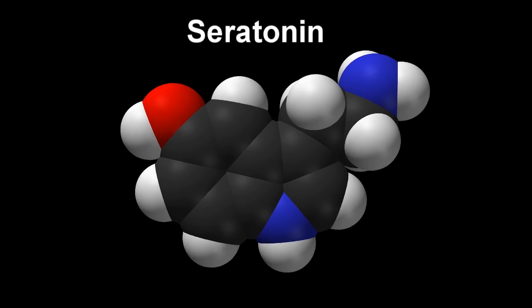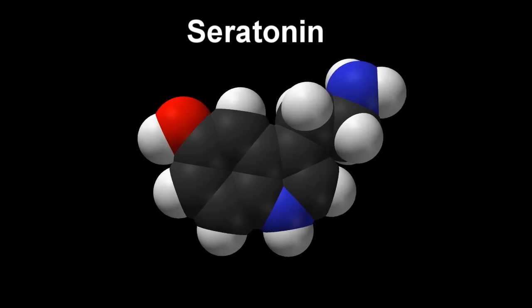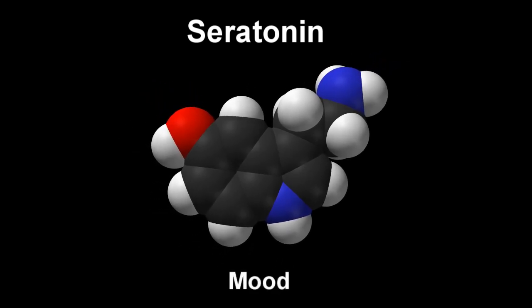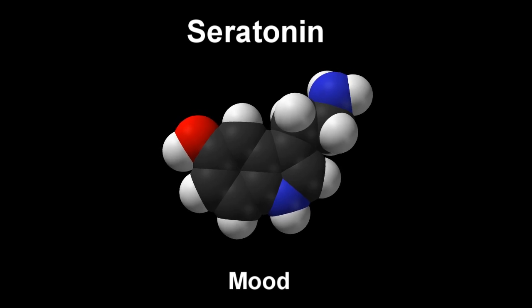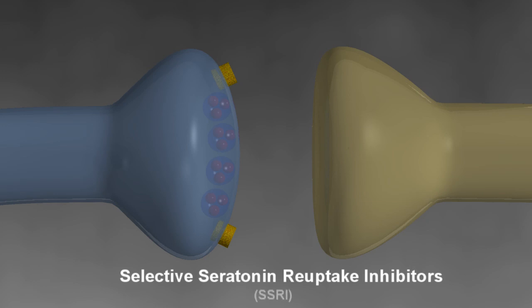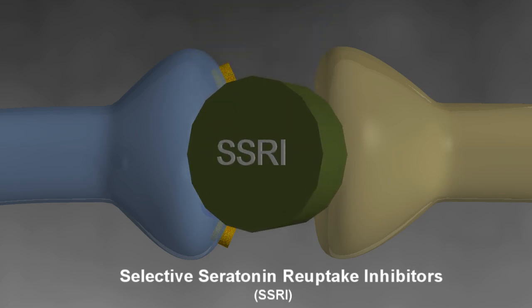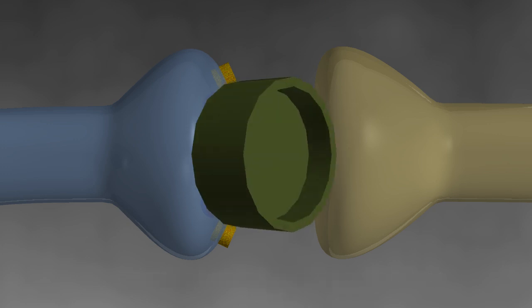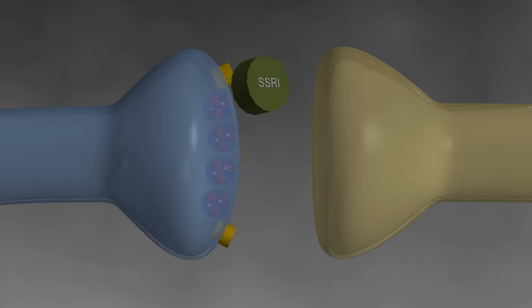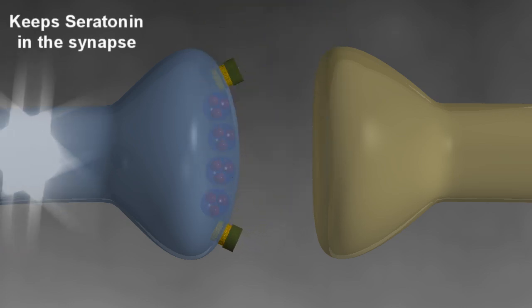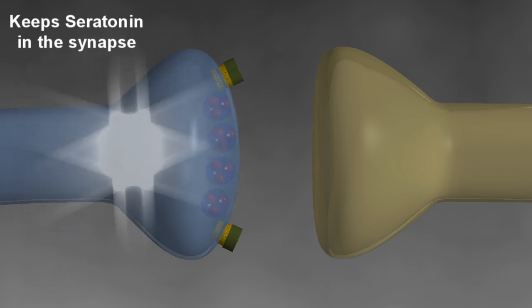Serotonin is a chemical transmitter operating in the area of the brain that controls our mood. Selective serotonin reuptake inhibitors, or SSRIs, are a class of antidepressants that block the reuptake transporters on the presynaptic cleft and keep serotonin in the synapse to treat debilitating depression.